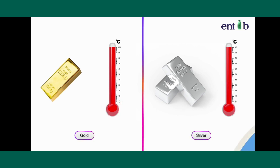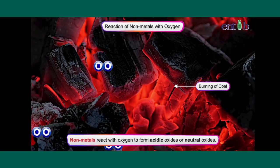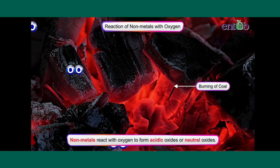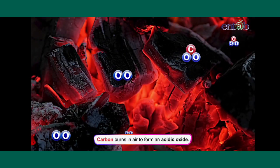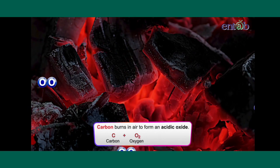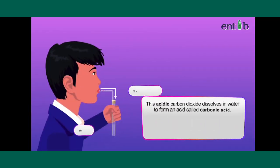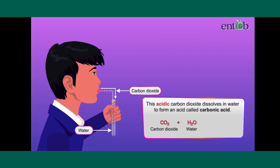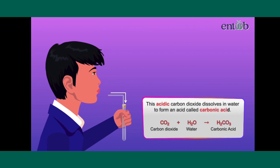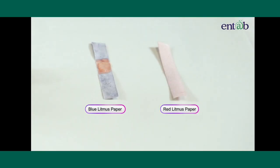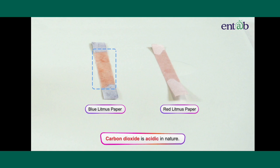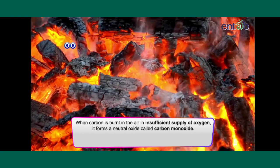Non-metals react with oxygen to form acidic oxides or neutral oxides. These acidic oxides turn blue litmus red. Carbon is a non-metal; when it burns in air it reacts with oxygen to form an acidic oxide — carbon dioxide. This acidic carbon dioxide dissolves in water to form carbonic acid, which turns blue litmus red, confirming that carbon dioxide is acidic in nature.